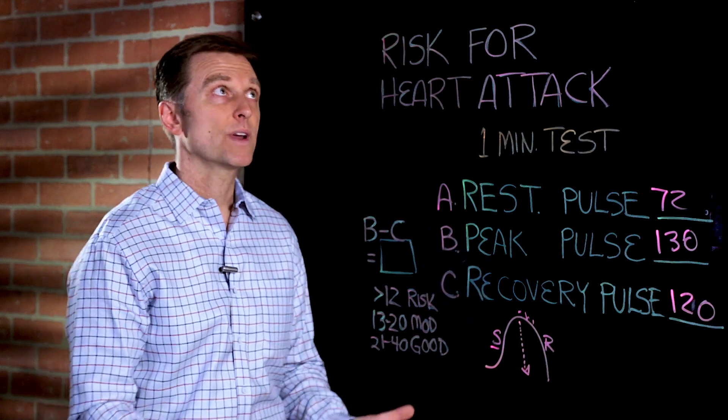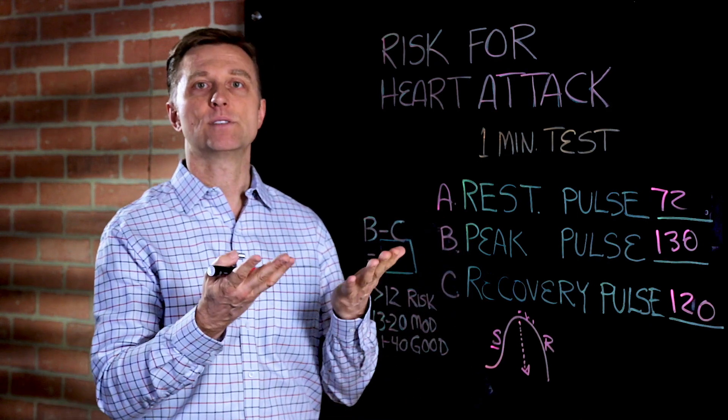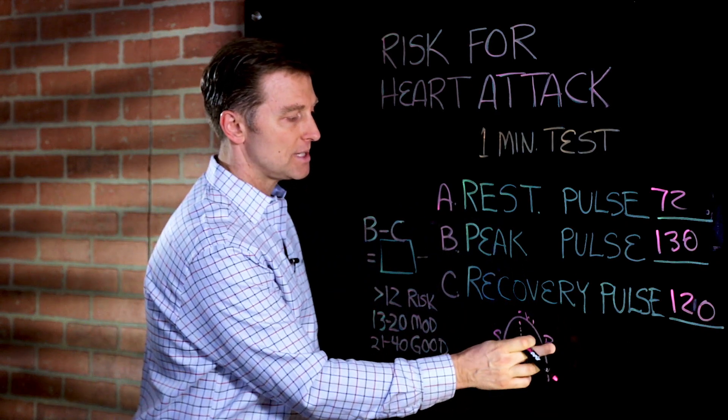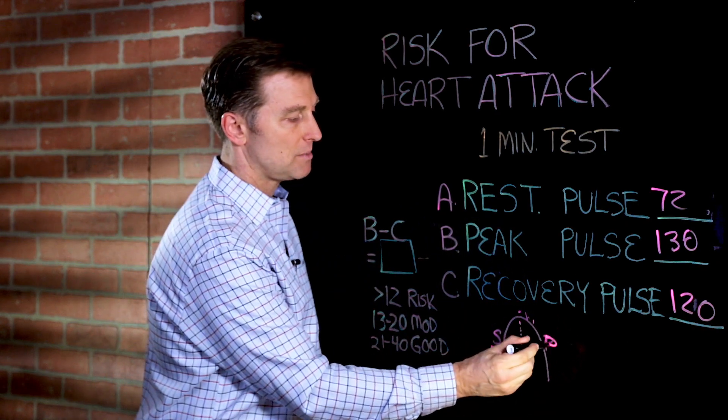So let's say you run up the stairs. Your pulse rate goes up. The blood pressure goes up. Everything goes up. As soon as you stop, the opposite system kicks in called the parasympathetic.